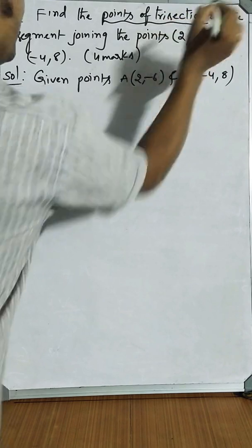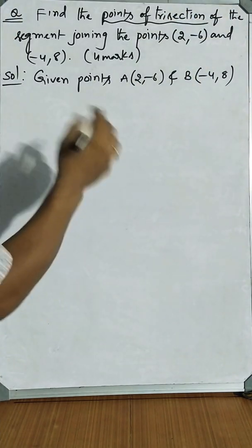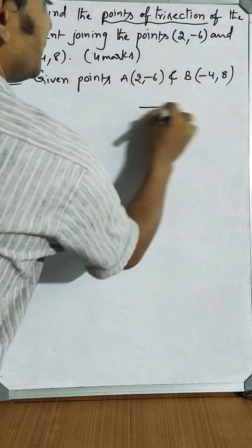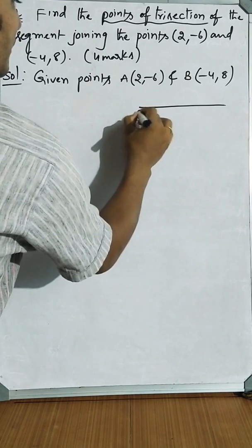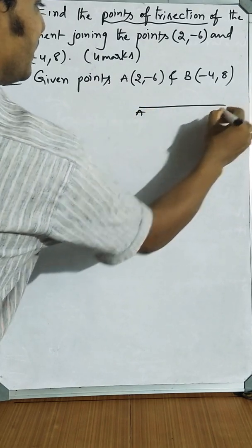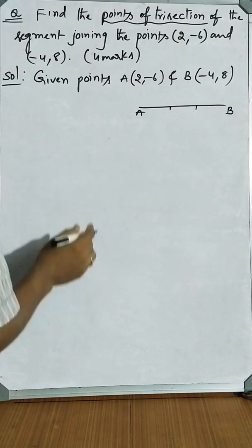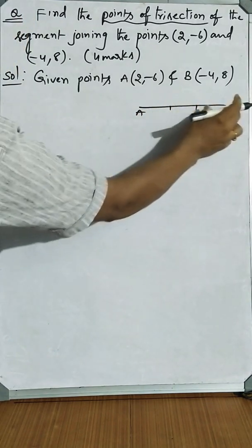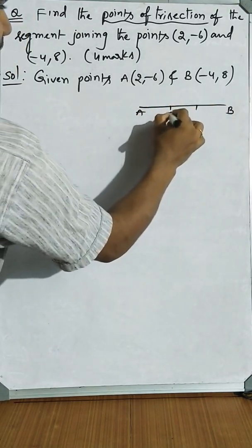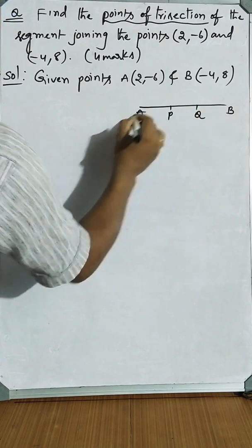Points of trisection - tri means 3, section means parts. If we take the segment AB and we have to make 3 equal parts, to make 3 equal parts you need 2 points - let them as P and Q.